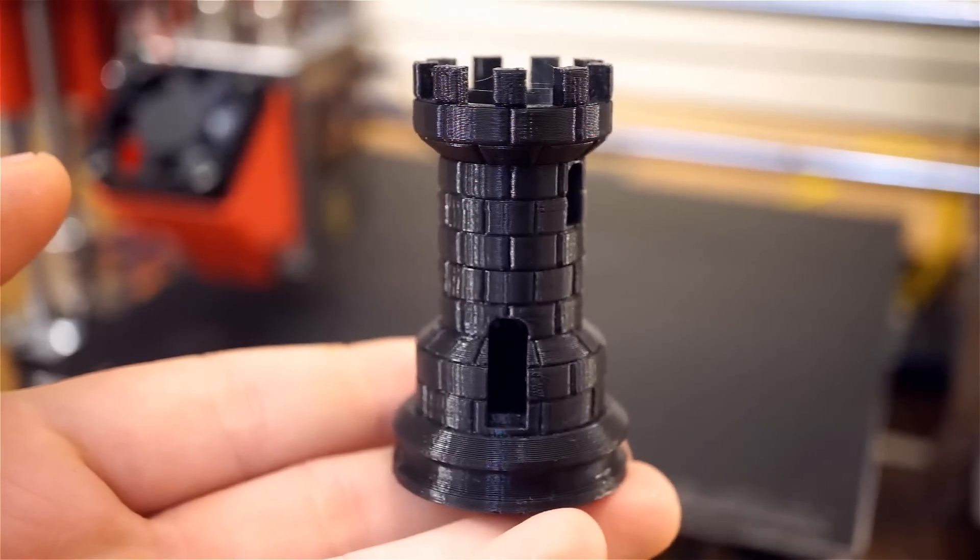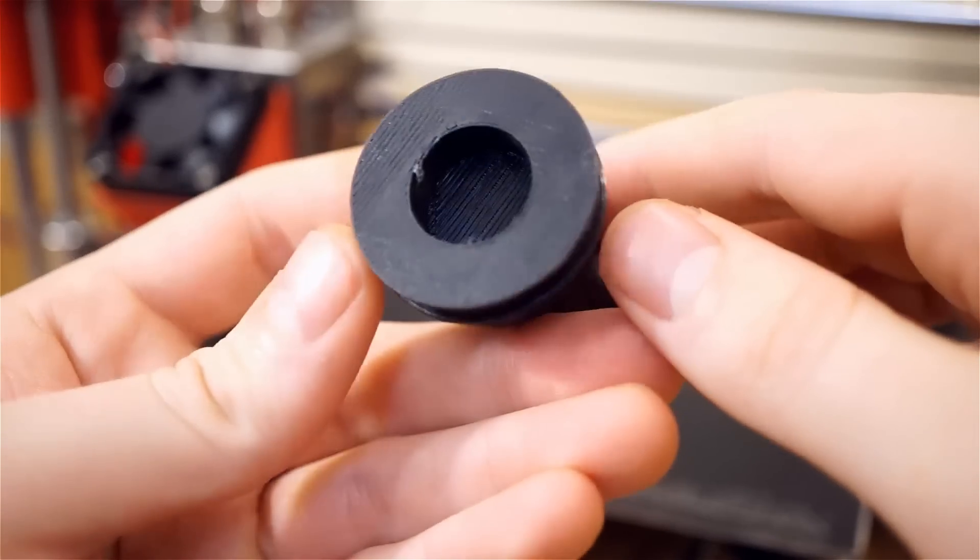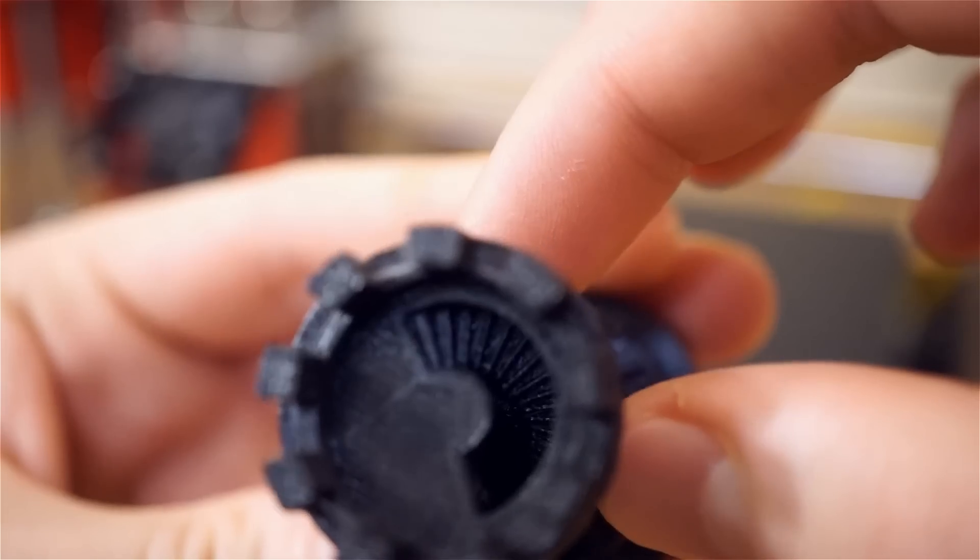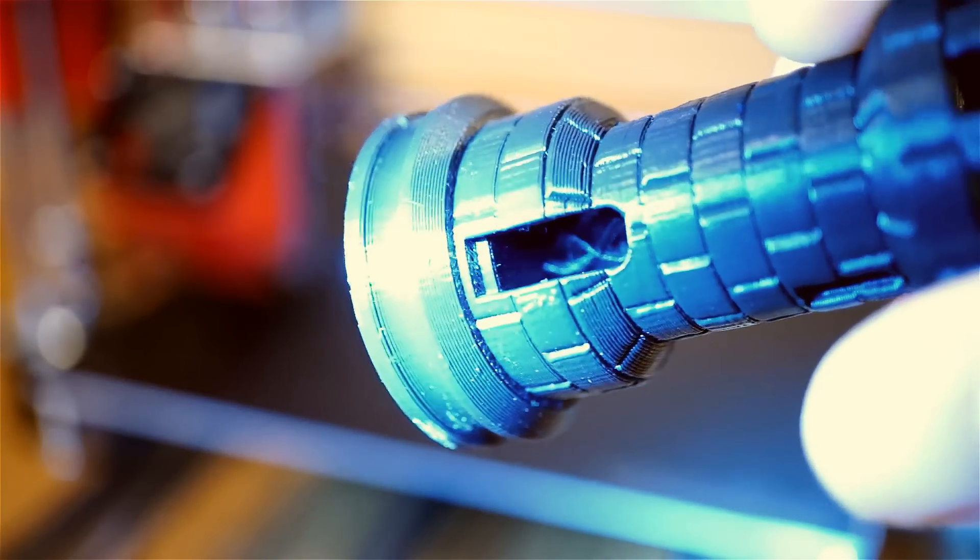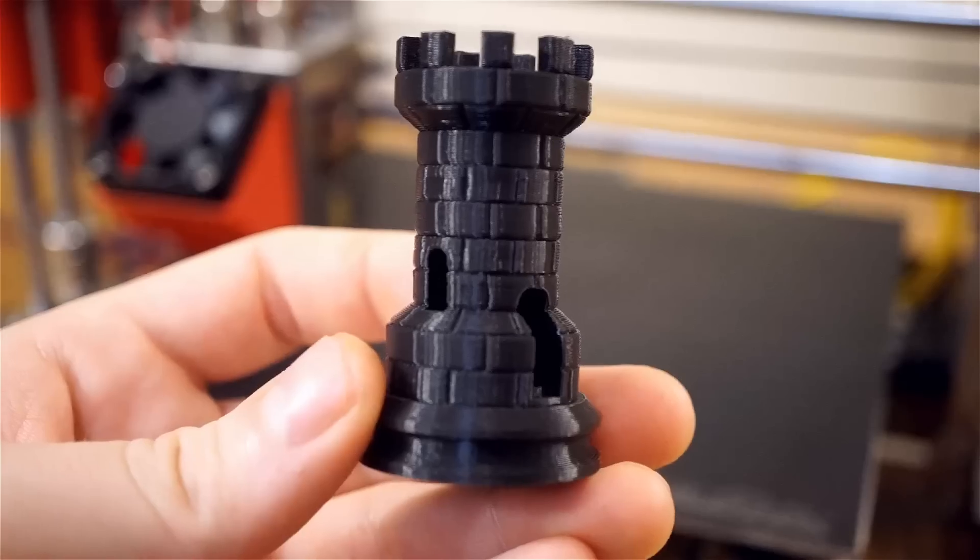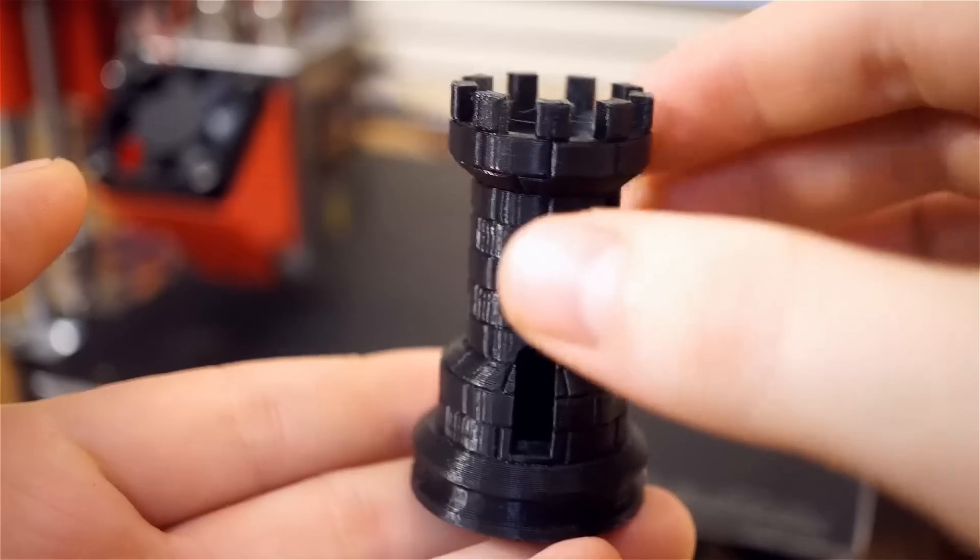This Rook is another good test of the single color detail resolution. This model has a tiny staircase that can be clearly seen, as well as a thin double helix that is hard to film but is all intact. The small details are impressive when considering the size of the entire model.